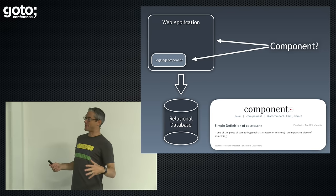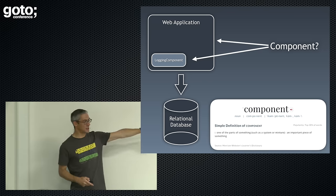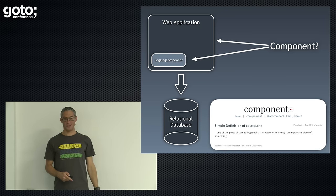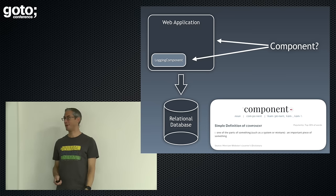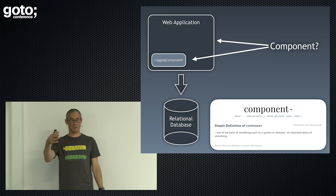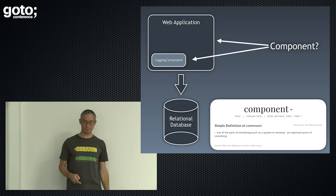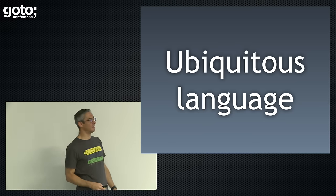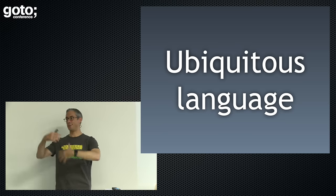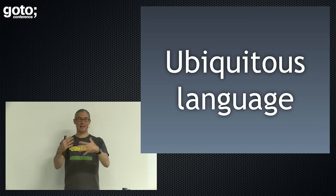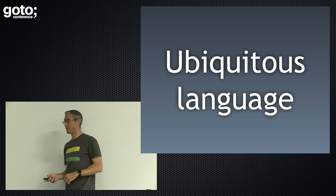To put this very simply: imagine we're building a simple system consisting of a web app and a database. The word 'component' means 'part of.' For some people, the web app is a component of the entire system. For others, a logging component is a component of the web app. Same word, different levels of abstraction. It's the ubiquitous language thing. We've been going on about DDD and having a ubiquitous language between us and the business — but we don't have that ubiquitous language for ourselves. That's the problem we need to solve.